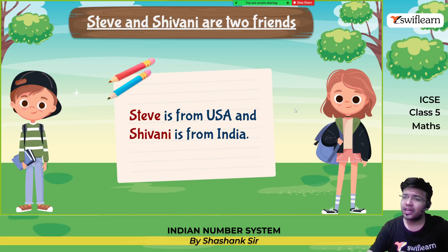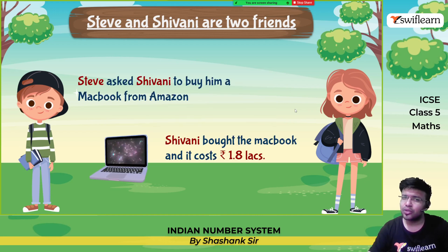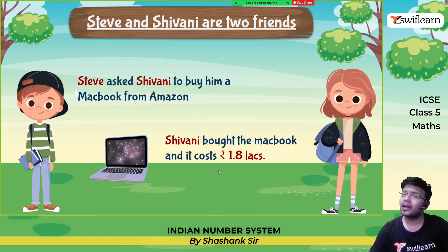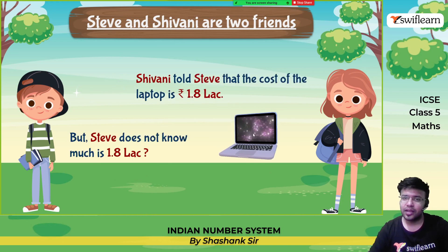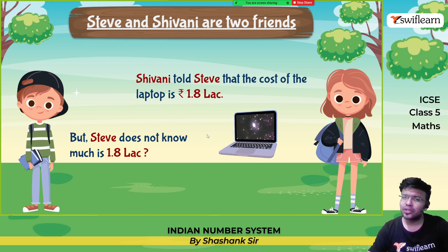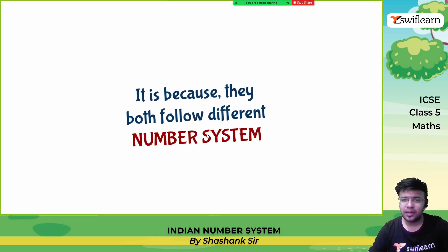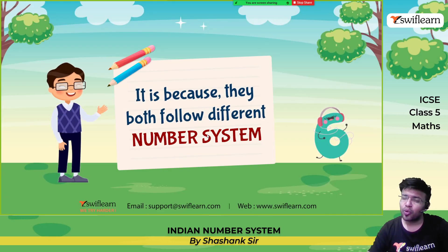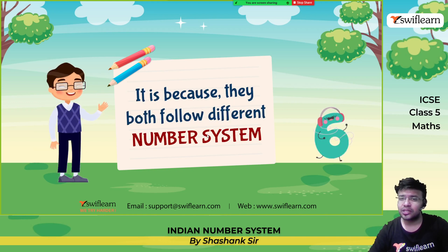Steve and Shivani are two friends. Steve is from the USA and Shivani is from India. Steve asked Shivani to buy him a MacBook from Amazon. Shivani bought the MacBook and it cost her rupees 1.8 lakhs. Shivani told Steve that the cost of the laptop is 1.8 lakhs, but Steve doesn't know how much 1.8 lakhs is. The reason is that they both follow different number systems.